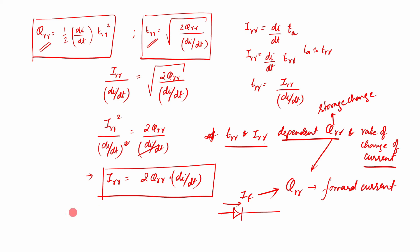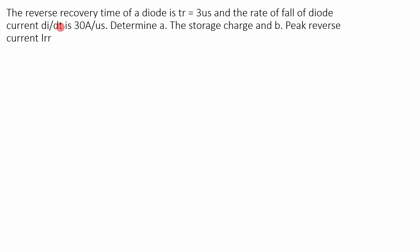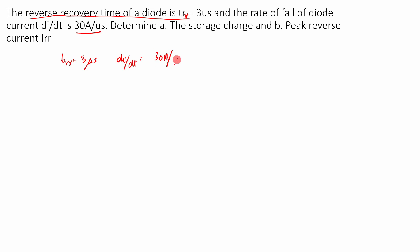Now that you have understood all these concepts, let us do a small and very easy numerical. The reverse recovery time of a diode is TRR equal to 3 microseconds, and the rate of fall of the diode current di/dt is 30 amperes per microsecond.